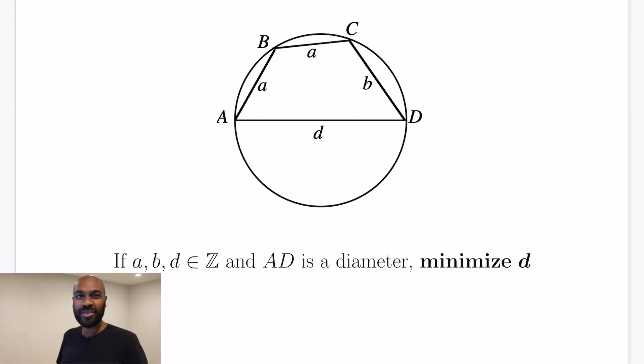Say I gave you this circle right here, and inscribed in it is a quadrilateral A, B, C, D. Its side lengths are A and A, both equal, B, which is different than A, and the diameter D.